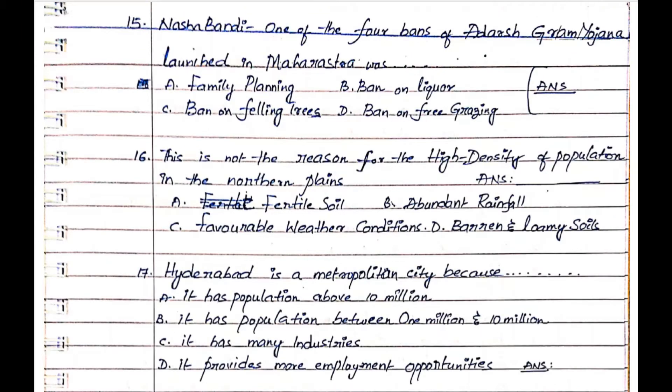Question 15: Nasha Bandhi, one of the four bands of Adarsh Gram Yojana launched in Maharashtra, was. Option A. Family planning, Option B. Ban on liquor, Option C. Ban on felling trees, Option D. Ban on free grazing. The answer is Option B. Ban on liquor.